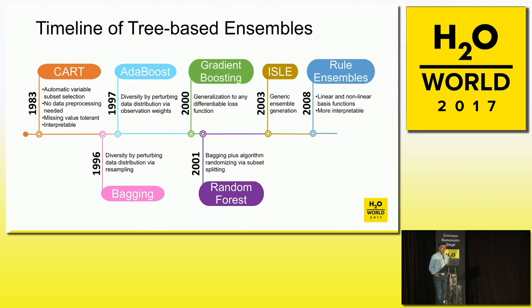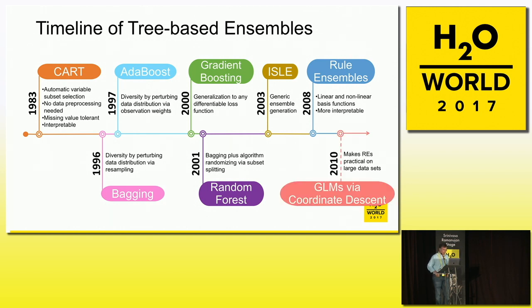CART had all these very attractive features except that it was not accurate, so we went to ensembling to achieve accuracy — but what went out the window in that process was interpretability. Rule ensembles are proposed as an attempt to recover interpretability. Rule ensembles became practical on very large data sets with the coordinate descent algorithm, which is a way of solving the regularized problem. We'll see the role of regularization in rule ensembles.